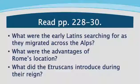A couple quick questions before the dig and drill. What were the early Latins searching for as they migrated across the Alps? Better farmland — they wanted to find a better place to farm. What were the advantages of Rome's location? Rome was near water, it's located on high ground because there are seven hills surrounding the city, and it was protected by the Alps to the north. What did the Etruscans introduce during their reign? A writing system based on Greek, paved roads, built arches, drained marshes, and constructed a sewage system. We've seen it three times — it's important.